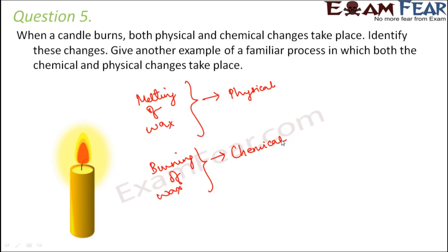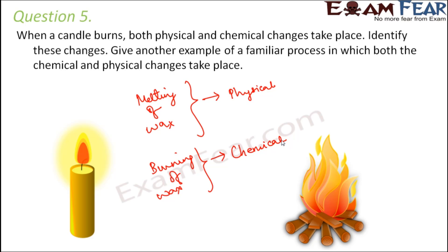Give another example of a familiar process in which both physical and chemical changes take place. Burning of wood: the wood burning is a chemical change because carbon dioxide is released and ashes are formed — new substances are formed. But at the same time, wood contains water, and that water gets converted into water vapor. Water and water vapor both have the same chemical composition (H₂O); only the state changes from liquid to vapor — so that part is a physical change.